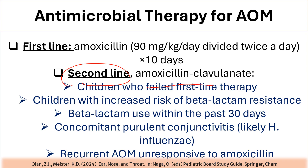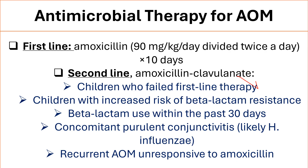The second-line treatment is amoxicillin-clavulanic acid (Augmentin), at the same high dose of 90 mg per kg per day divided twice a day, for 14 days. Indications for Augmentin include: children who fail first-line therapy, children with increased risk of beta-lactam resistance such as daycare attendees, beta-lactam use within the past 30 days, concomitant purulent conjunctivitis (most likely caused by Haemophilus influenzae), and recurrent acute otitis media unresponsive to amoxicillin.